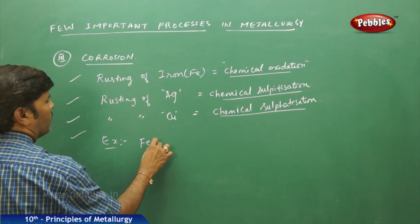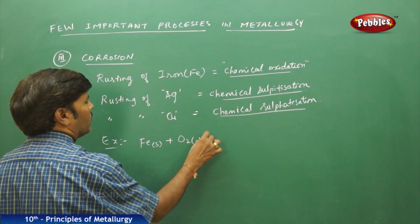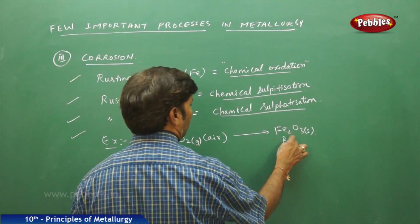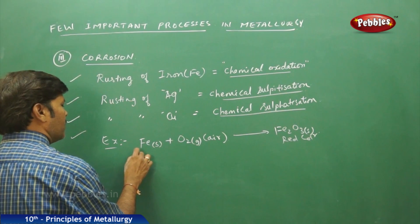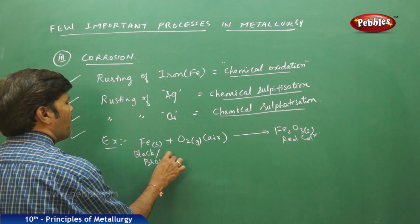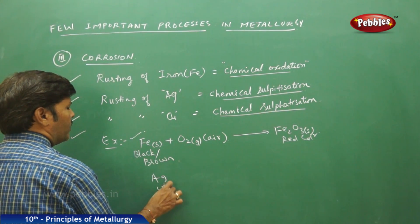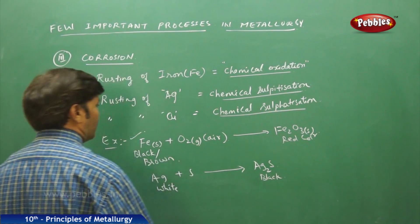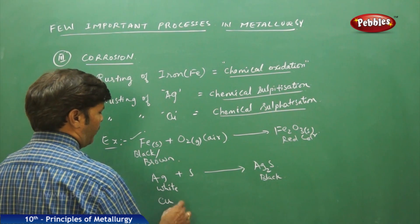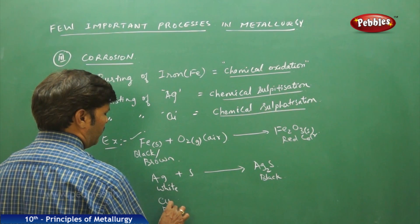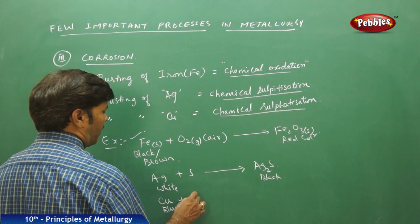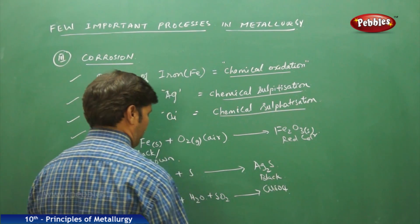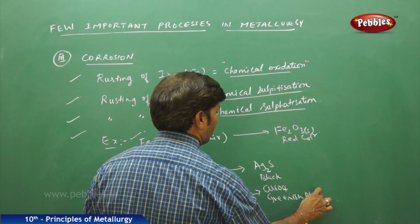For example, iron solid when exposed to oxygen in air forms oxide of iron, which is red or black-brown in color. Silver is white, but when it comes in contact with sulfur it forms Ag₂S, which is black — a form of rusting. Copper is blue, but when it comes in contact with water and sulfur dioxide it forms copper sulfate, which is greenish-blue in color.